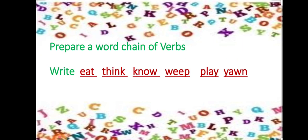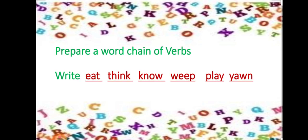Let us take a look at some examples. We are going to prepare a word chain of verbs. The first word is 'write.' Write has ended with 'e', so I have added another verb to it, that is 'eat.'